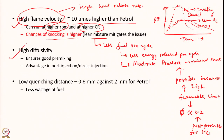Another benefit is hydrogen's very high diffusivity, which ensures good pre-mixing with air. With good availability of oxygen near each fuel particle, oxidation is thorough and unburnt fuel is minimized. This is an advantage over liquid fuels like petrol or diesel, which must first evaporate and then mix with air, whereas hydrogen as a gaseous fuel has much higher diffusivity in air compared to hydrocarbon-based fuels.